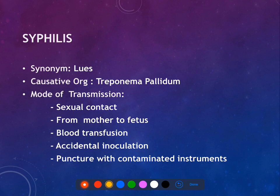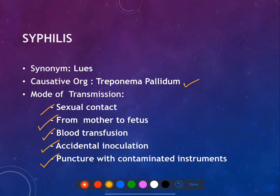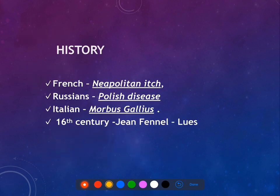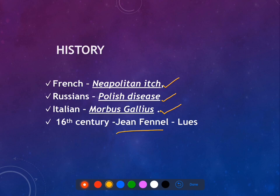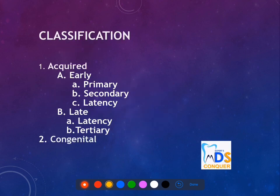The third infection is syphilis, also called lues. The causative organism is Treponema pallidum. Modes of transmission include sexual contact, mother to fetus, blood transfusion, accidental inoculation, or puncture with contaminated instruments. Historically, syphilis has been called the Neapolitan disease in French, Polish disease in Russian, and morbus gallicus in Italian. Fracastoro coined the term lues in the 16th century.